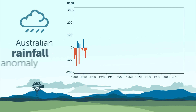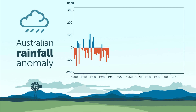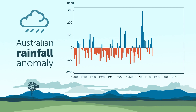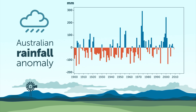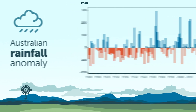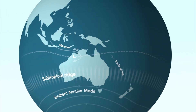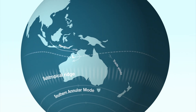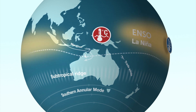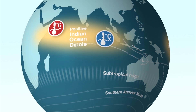Rainfall across Australia is naturally highly variable. It changes from year to year and from decade to decade due to natural cycles in the surrounding oceans. These cycles include El Niño, La Niña and the Indian Ocean Dipole.